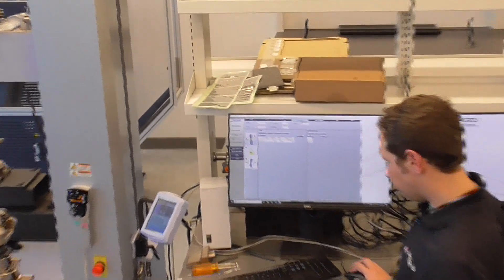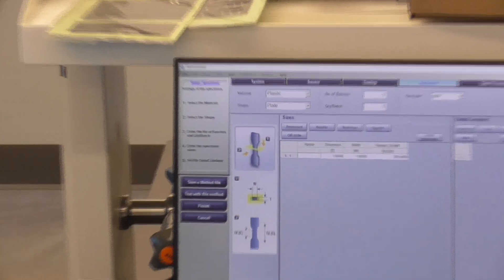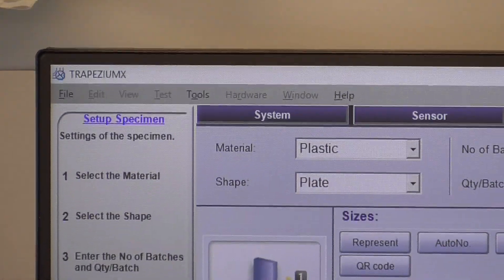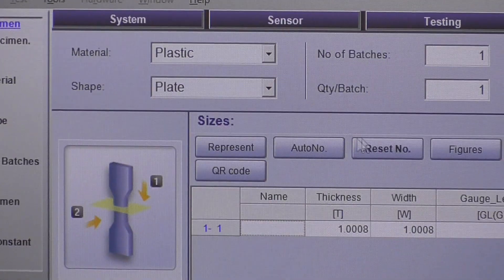Alright, moving on to specimen. So here's where you put in your sample material, your sample shape, and also the dimensions of your sample.